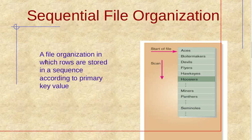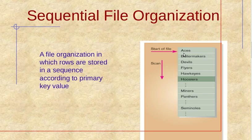Now let's discuss the types of file organization. In sequential file organization, the file is organized such that rows are stored in a sequence according to a primary key. All the files are organized based on that primary key.